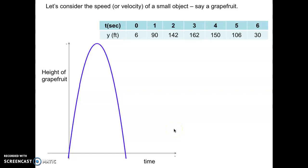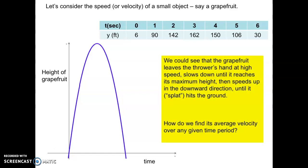I don't have an actual scale on the t and h axis, but I know the grapefruit went up, came to a peak, and then came down. The data was rounded to the nearest foot. We can see the grapefruit left the thrower's hand at high speed — from zero to one second it went from 6 feet to 90 feet, so it went up 84 feet in that first second. Then from 90 to 142 feet — 52 feet in the second second — showing it started fast then slowed as it changed direction.